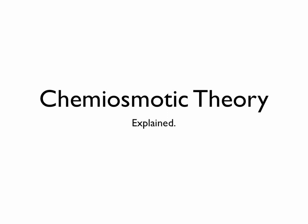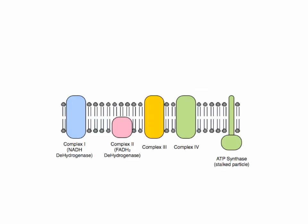In this video we're going to attempt to explain chemiosmotic theory alongside oxidative phosphorylation and electron transport. Here we have a short section of the inner mitochondrial membrane and embedded in that phospholipid bilayer we've got a bunch of proteins.